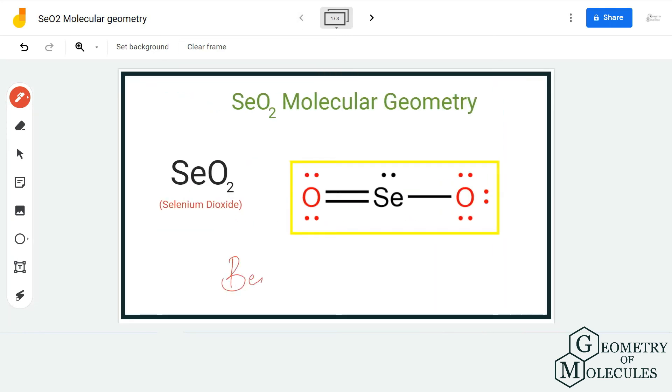Hence, instead of being a linear molecule, this is a bent molecule in nature. Although it doesn't exist as a single molecule, it forms bonds with other SeO2 molecules and exists in that particular state. But this is the molecular geometry of SeO2.